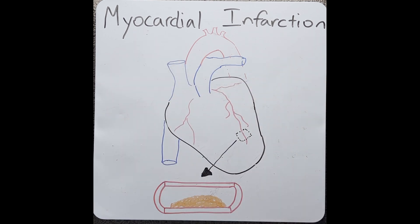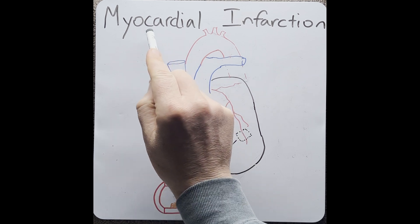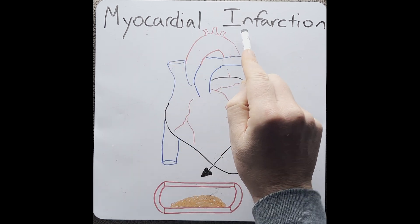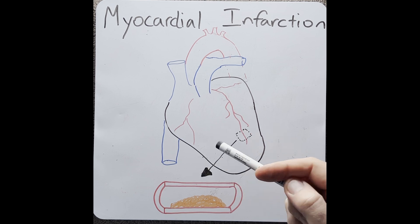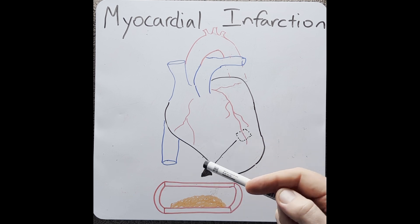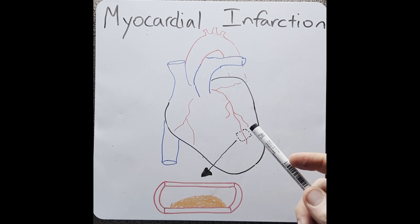Myocardial infarction is a fancy word which basically means a heart attack. Myo refers to muscle, cardial refers to heart, infarction refers to tissue death. So a myocardial infarction or an MI is a condition where some of the heart muscle dies.